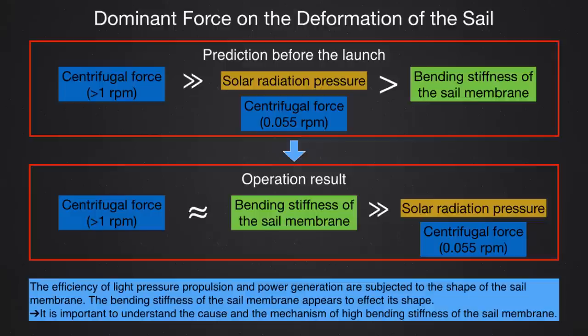From these results, we concluded that the bending stiffness of the sail membrane is very high, as shown in this concept figure. Before launch we thought solar radiation pressure was larger than bending stiffness, but from the operation results we now know that bending stiffness is larger than solar radiation pressure. This is very important knowledge for the design of future solar sails and for designing the appropriate spin rate of a solar sail.